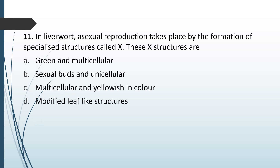In liver rot, asexual reproduction takes place by formation of specialized structures called X. These X structures are: green and multicellular; sexual buds and unicellular; multicellular and yellowish in color; or modified leaf-like structures. The correct answer is option A — these X structures are green and multicellular.